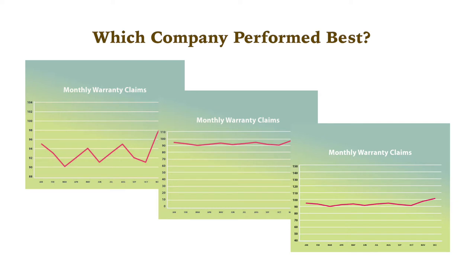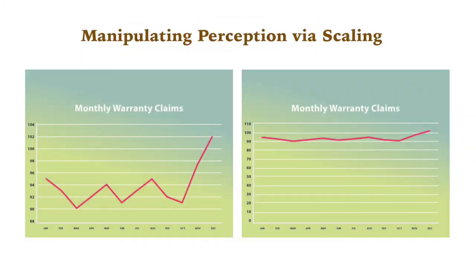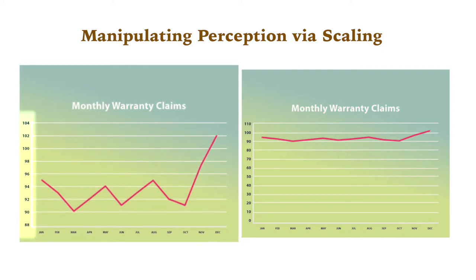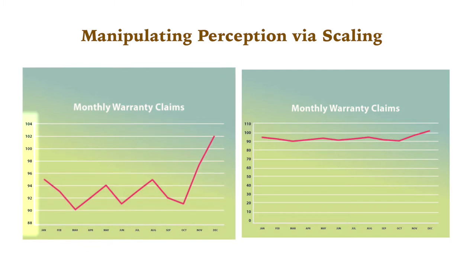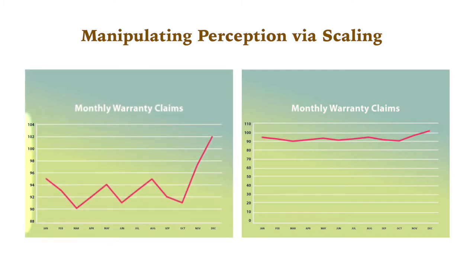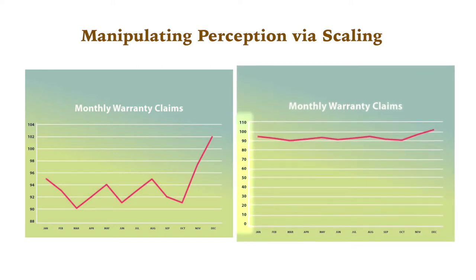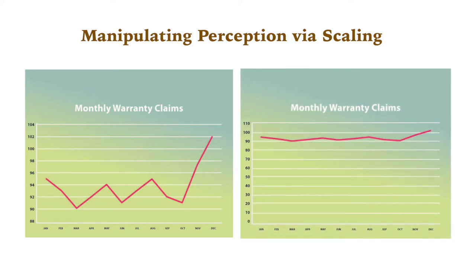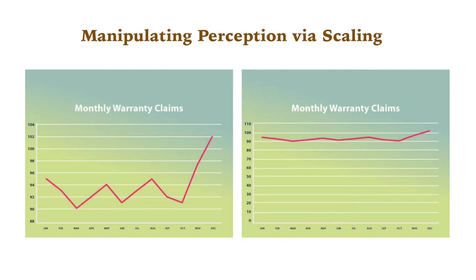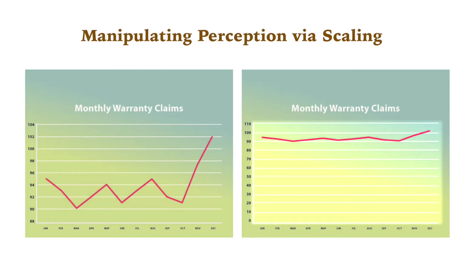The only differences are the choices made when the graphs were created. On the left, the vertical axis is scaled from 88 to 104, which zooms in on the data and emphasizes the monthly variance. In contrast, the graph on the right is scaled from 0 to 110, which has the opposite effect. It's the exact same data, but the conclusions audiences are likely to reach are quite different. Readers might conclude that the company on the left is wildly erratic, and that the company on the right performs consistently but poorly.